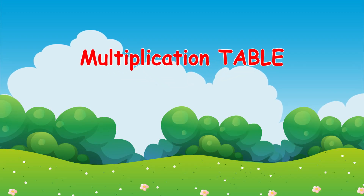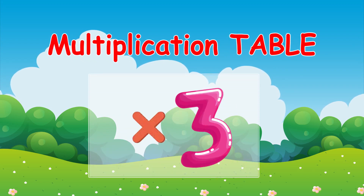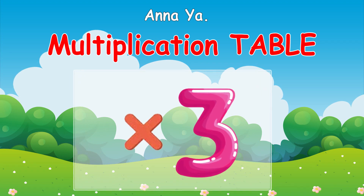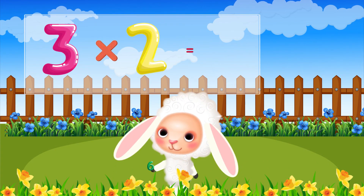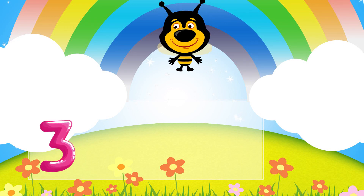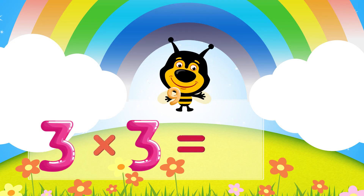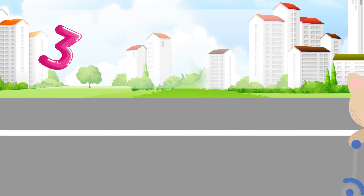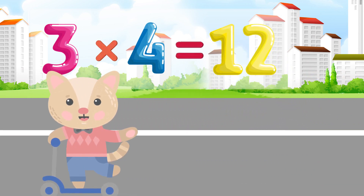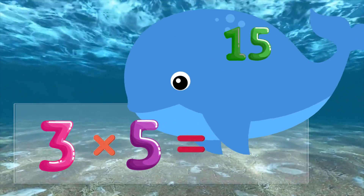Three times table. Three times two is six, three times three is nine, three times four is twelve, three times five is fifteen.